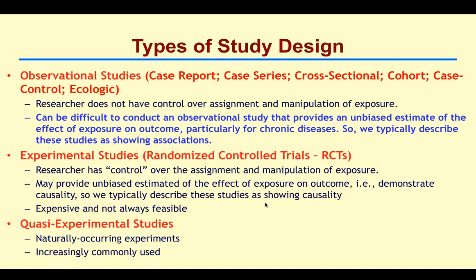Let's look at the types of study designs. These are classified into three major categories. The first type is called observational studies. Examples of observational study designs include case reports, case series, cross-sectional studies, cohort studies, case-control studies, and ecologic studies. These are all observational study designs and they fall under the category of observational studies.